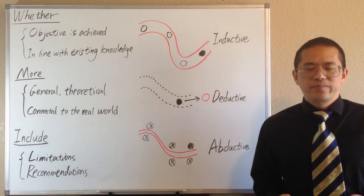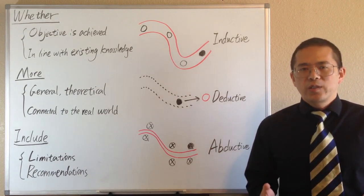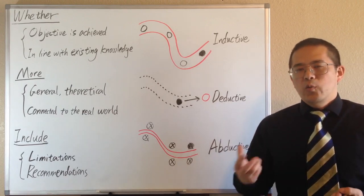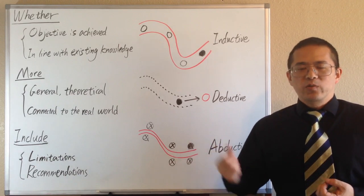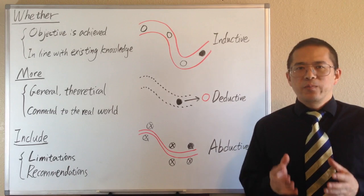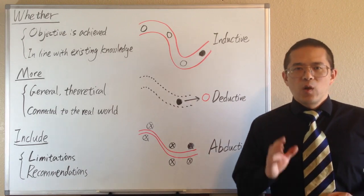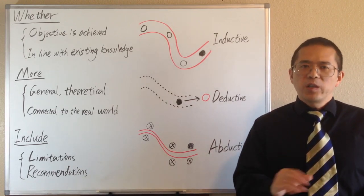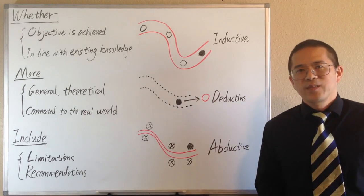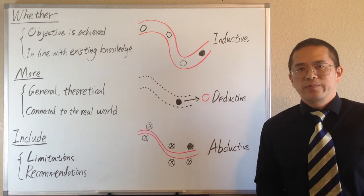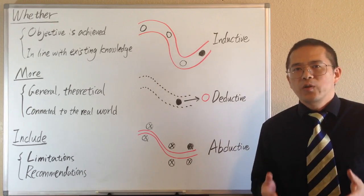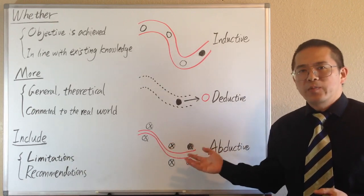In abductive reasoning, given all the evidences, we need to rule out what is not likely to be true, until we are left with what is most likely to be true. As the famous British detective character Mr. Holmes said, when you have eliminated the impossible, whatever remains must be the truth. Based on abductive reasoning, we can draw a conclusion that provides the best and most plausible explanation for a group of observations.